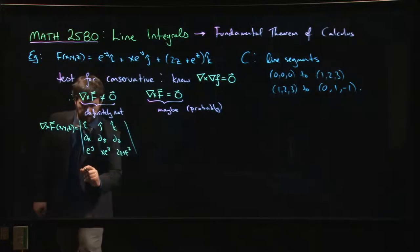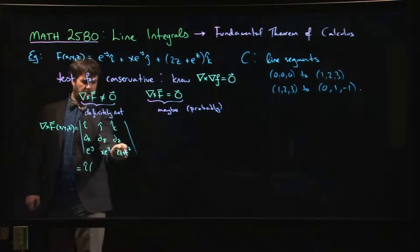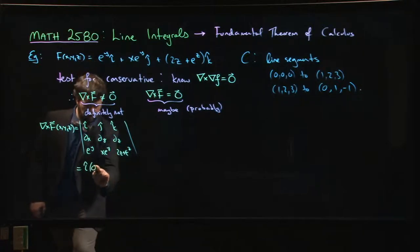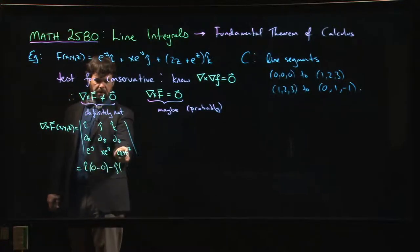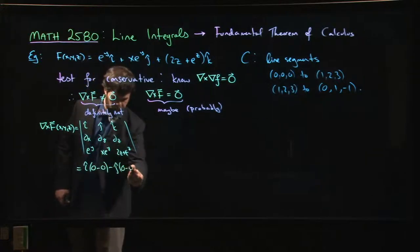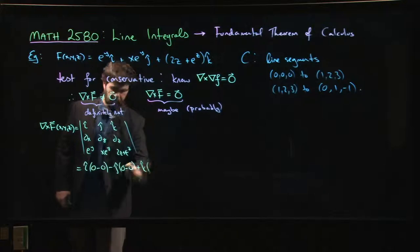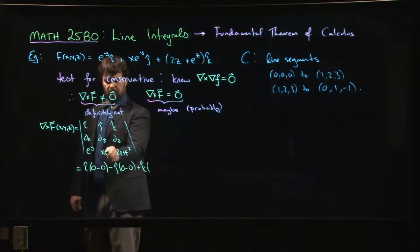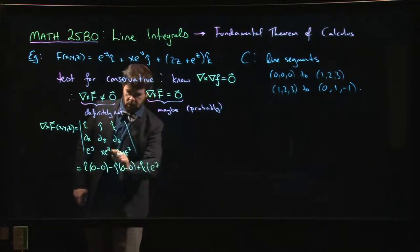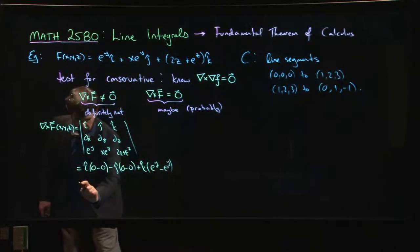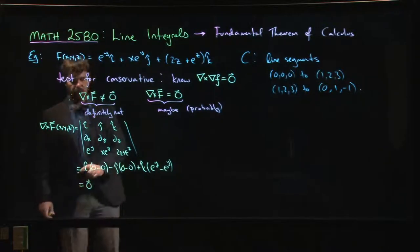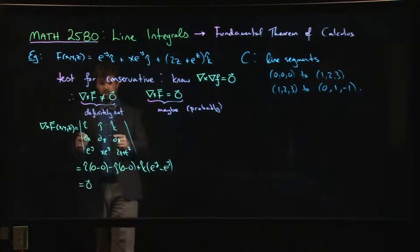And we expand this out. So in the i component, this doesn't depend on y, so that derivative is 0. This doesn't depend on z, so that derivative is 0. In the j, doesn't depend on x, doesn't depend on z. And for k, well, the x derivative here gives me e to the y. The y derivative gives me e to the y. e to the y minus e to the y gives me 0. So we have the 0 vector, so it checks out.